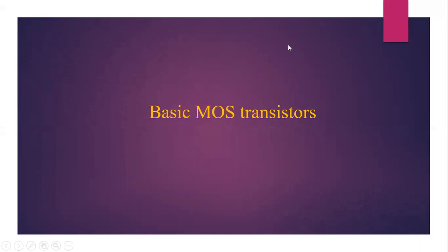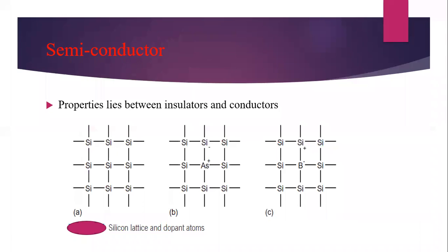In this video we are going to see about basics of MOS transistor. We start with the properties of semiconducting materials. The electrical property of semiconducting materials lies between insulator and conductor. Commonly used semiconducting materials are silicon and germanium, both having four valence electrons. In some cases the semiconducting material acts as an insulator and in some cases it acts as a conductor.